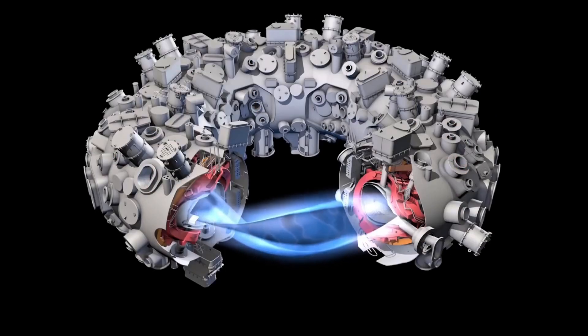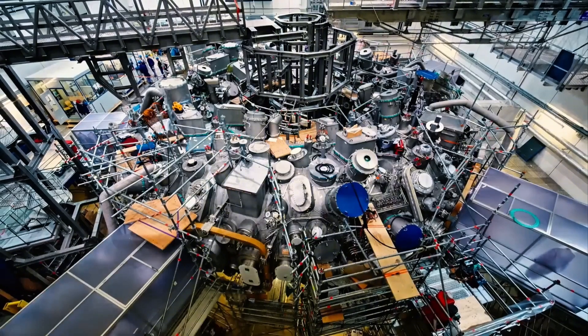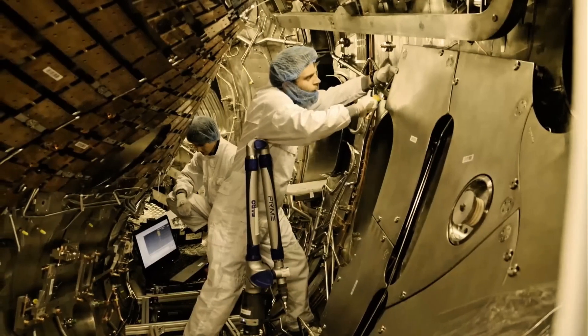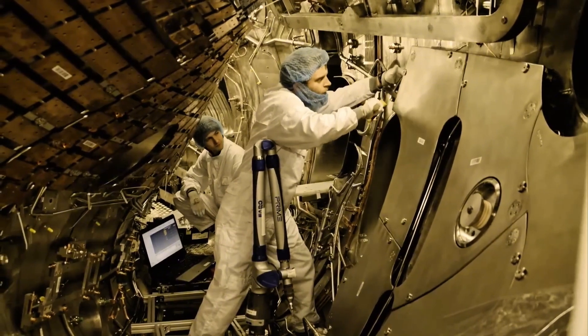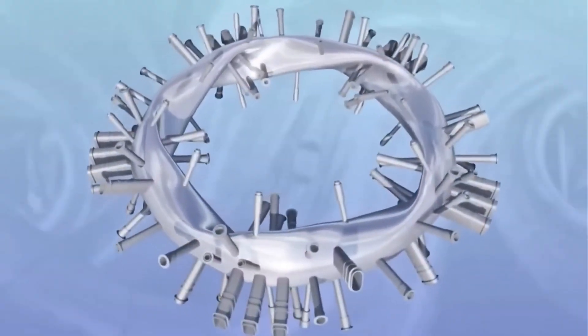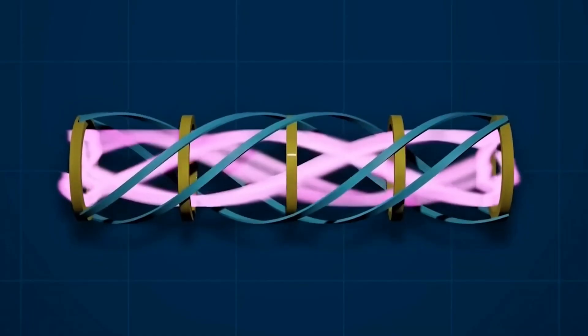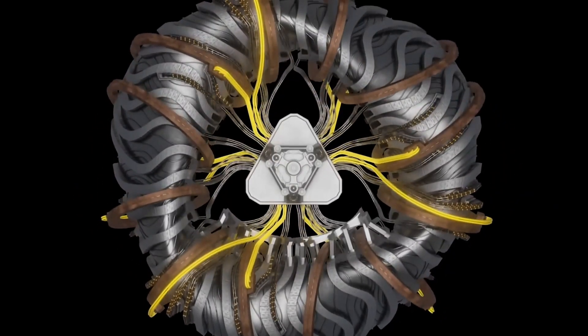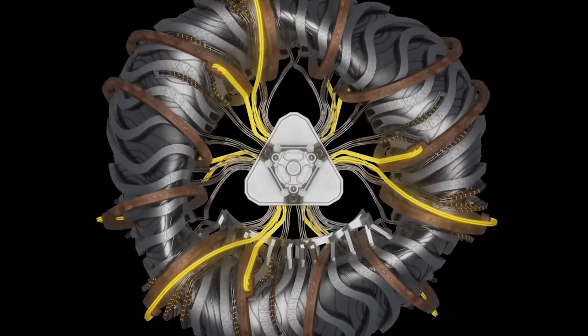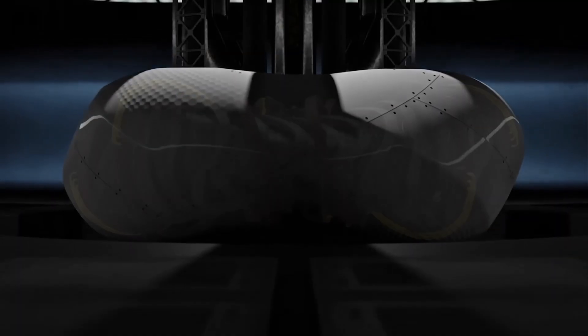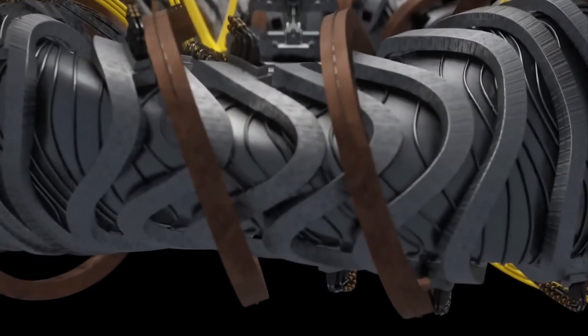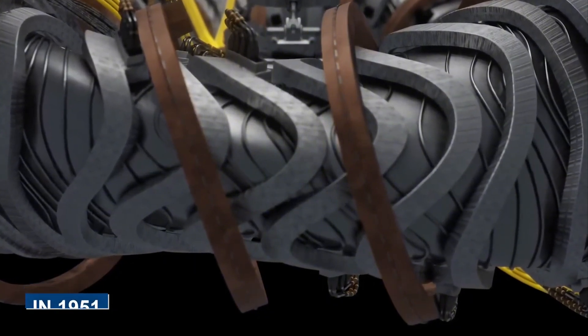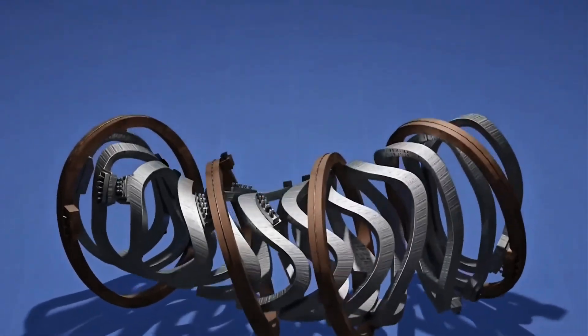Tokamaks have demonstrated that fusion is possible. For example, world-renowned experiments such as JT-60 in the UK, and newer machines like KSTAR South Korea and EAST China have achieved high plasma temperatures and record fusion output. The ITER project in France is the most ambitious tokamak yet, aiming to show sustained fusion power by the 2030s.